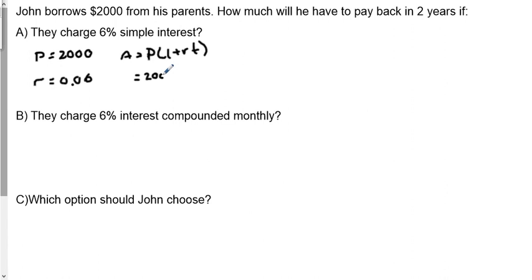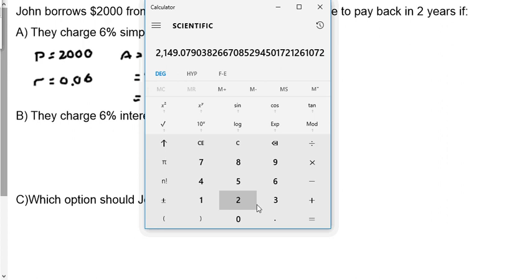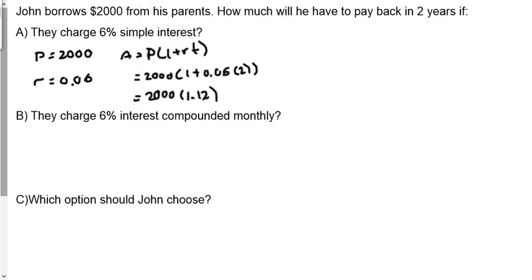So I'm going to have 2,000 times 1 plus 0.06 times 2. So I'm going to have 2,000 times 1.12. I'm going to multiply that. Let's go ahead and do that on my calculator. And I get a value of $2,240.